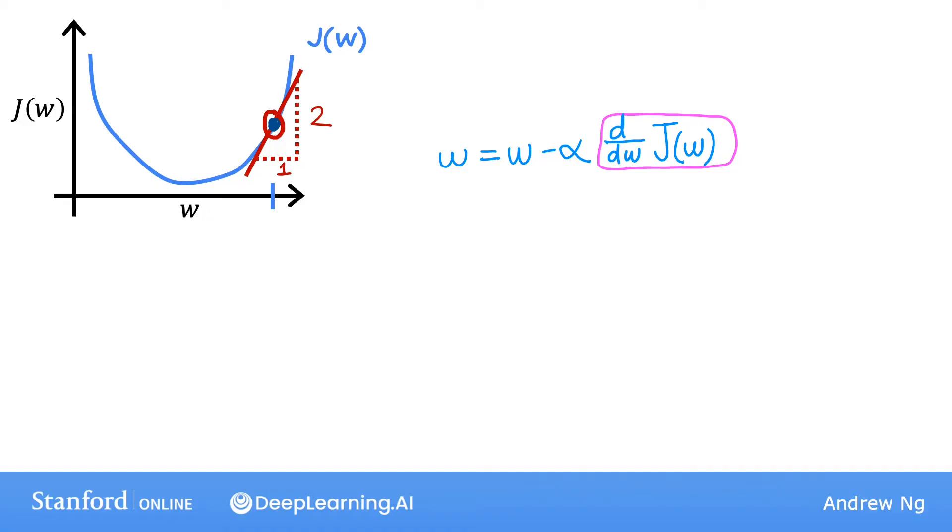For example, the slope might be 2 over 1. When the tangent line is pointing up and to the right, the slope is positive, which means this derivative is a positive number, greater than zero. So the updated w is going to be w minus the learning rate times some positive number. The learning rate is always positive, so if you take w minus a positive number, you end up with a new value for w that is smaller. On the graph, you are moving to the left, decreasing the value of w.